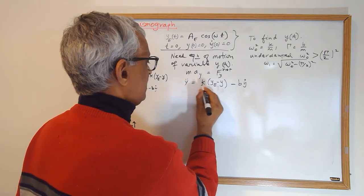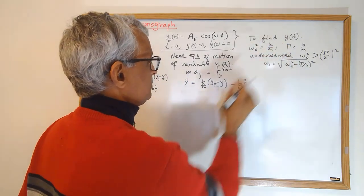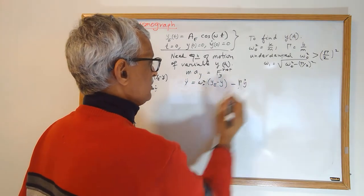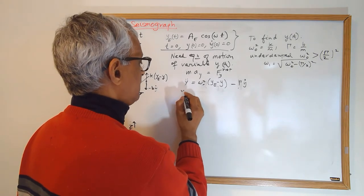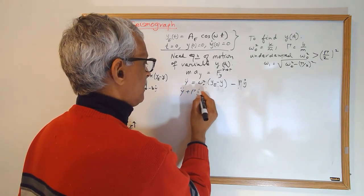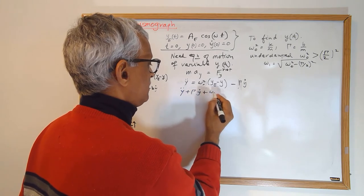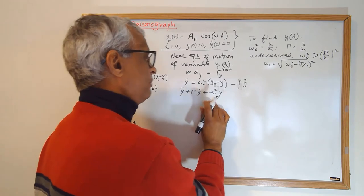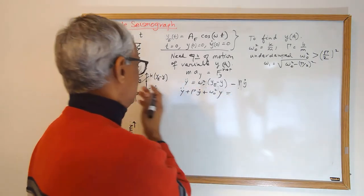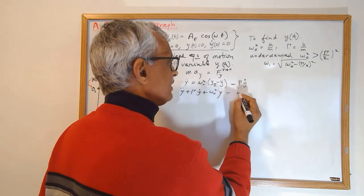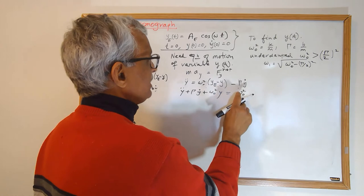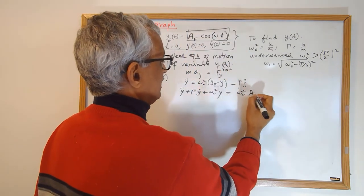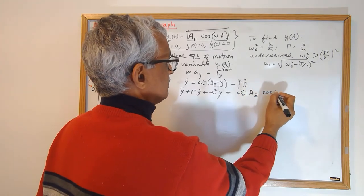Now let's rearrange. Dividing by m and introducing ω₀² and γ, and bringing terms to one side, I get: ÿ + γ·ẏ + ω₀²·y = ω₀²·y_e. These terms are identical to a damped oscillator — no surprise. On the right-hand side I get ω₀²·y_e, and y_e is supposed to be A_e·cos(ωt).